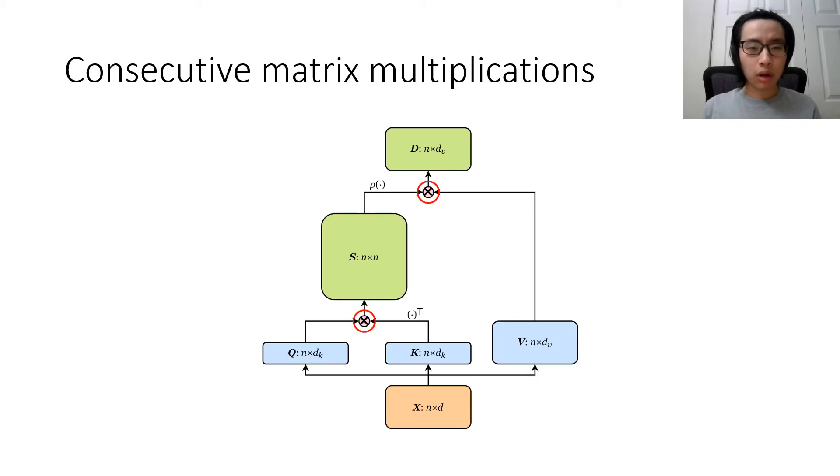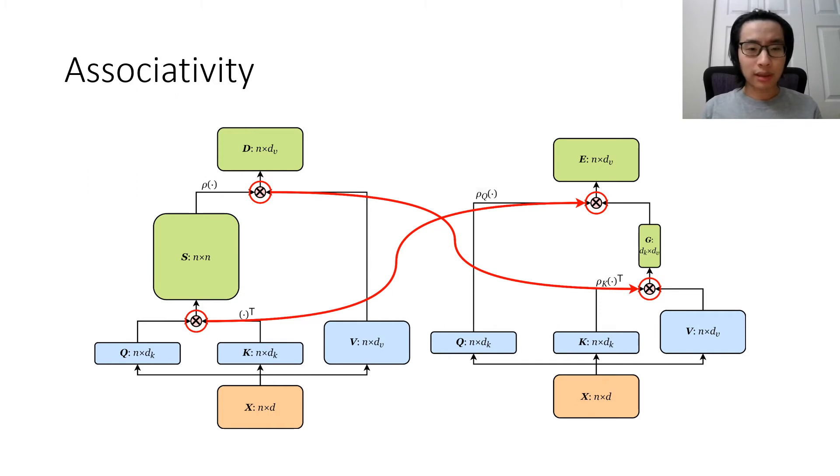Our core observation is that in dot product attention, there are two consecutive matrix multiplications. Therefore, we can utilize the associativity of matrix multiplication to switch the order of computation and massively reduce the size of the intermediate output and therefore reduce the complexity from quadratic to linear.